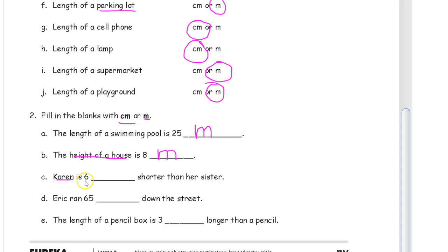Karen. That's a person's name. It's a girl, probably. She's six something shorter than her sister. Well, if a house is eight meters tall, she's not going to be six meters shorter than her sister. So that's going to have to be centimeters.